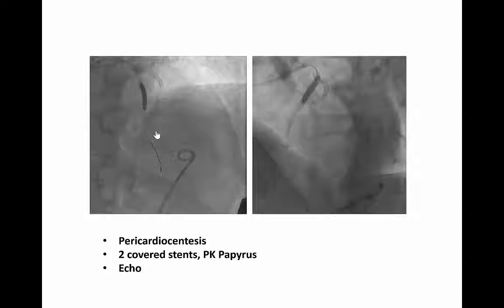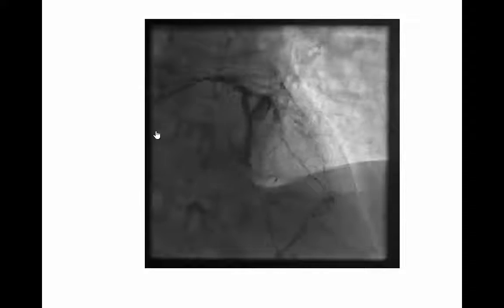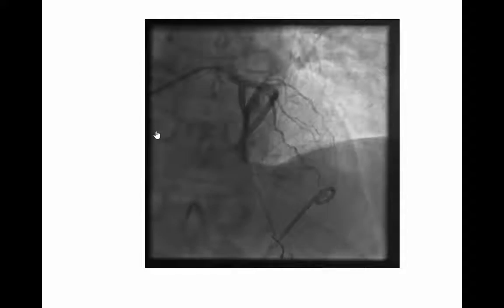I have to place two covered stents — PK Papyrus from Biotronik — and thanks to that, I tried to close the perforation. But as you see, there is still bleeding. By echo, we can see that there is no hematoma in the left ventricular muscle, so the left ventricular ejection fraction is still good. But there is a blood effusion in the pericardium.